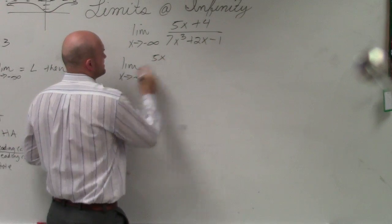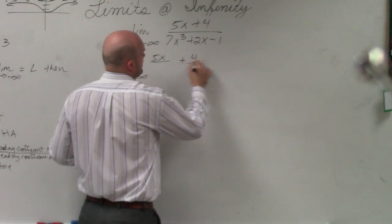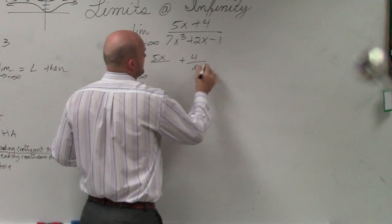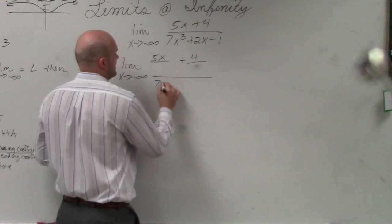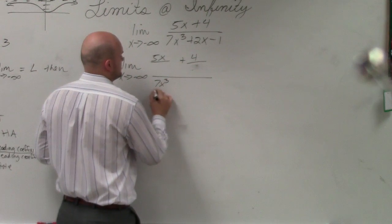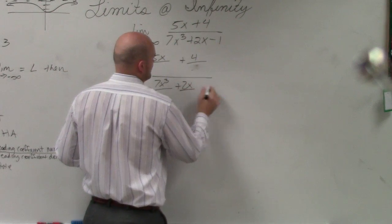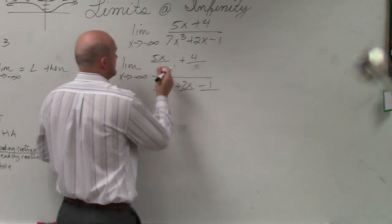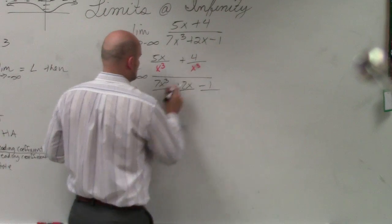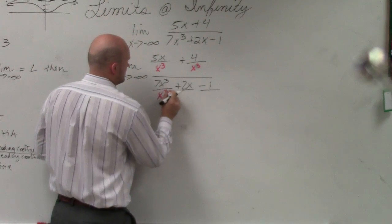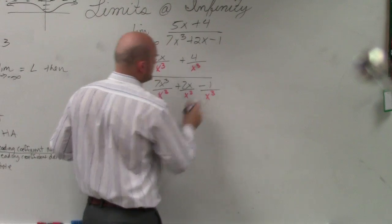So I'm going to have 5x over plus 4 over, divided by 7x cubed over, plus 2x over, minus 1 over. So I'm just going to write x cubed, x cubed, x cubed, x cubed, x cubed.